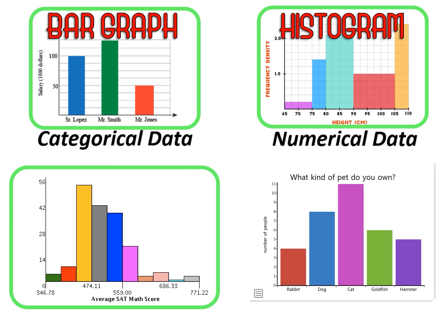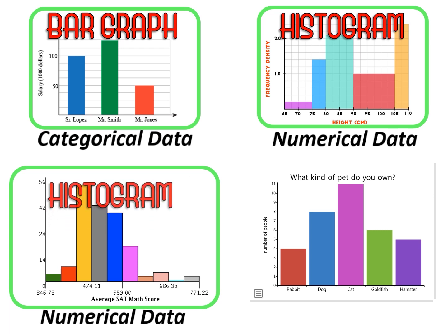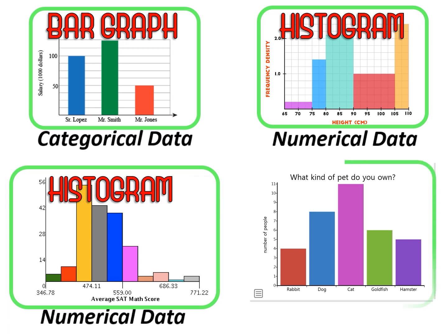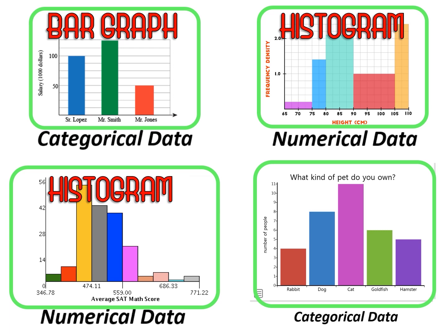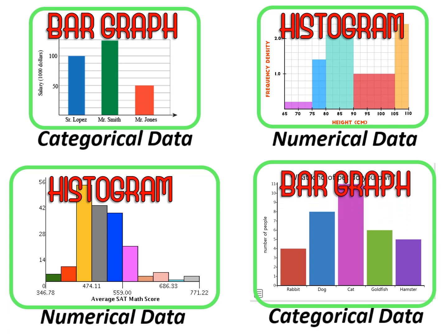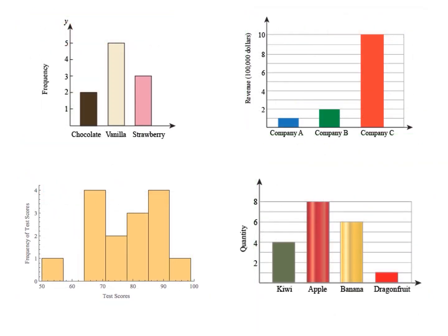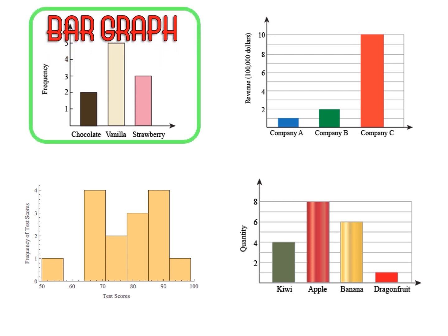The next graph, average SAT scores, is numerical data and it is a histogram. What kind of pet do you own would be categorical data, and it is a bar graph.